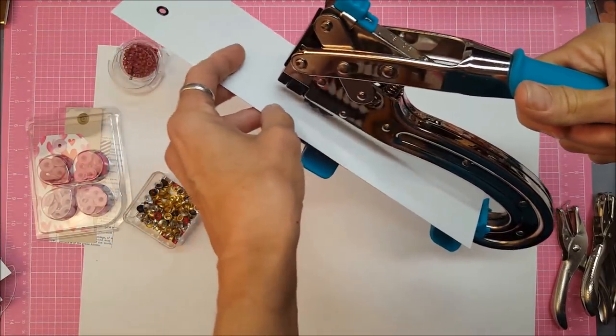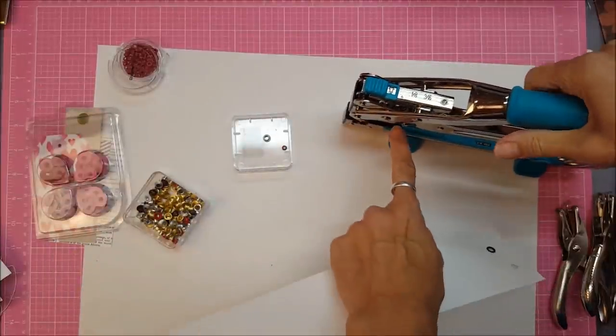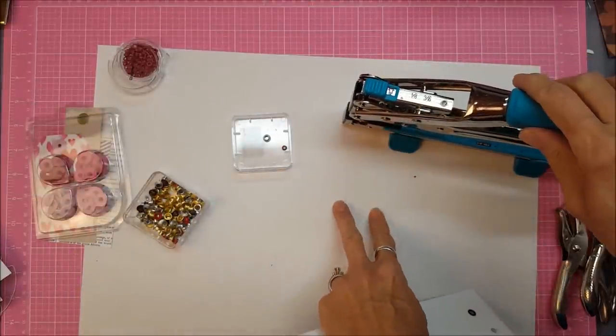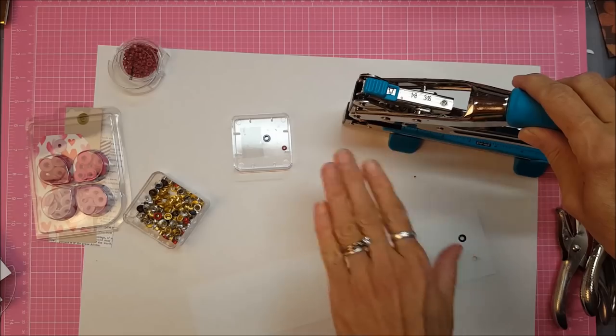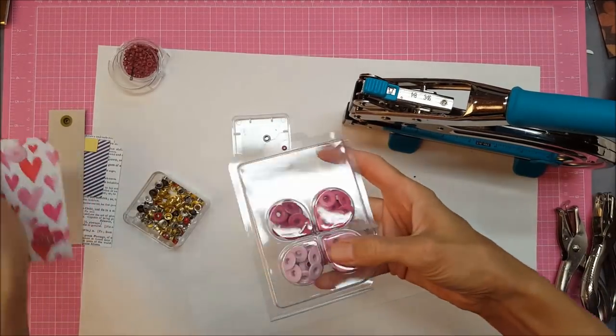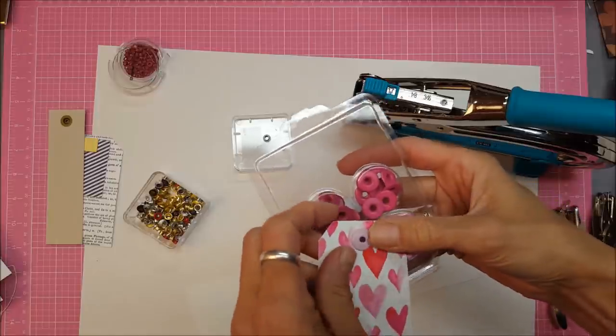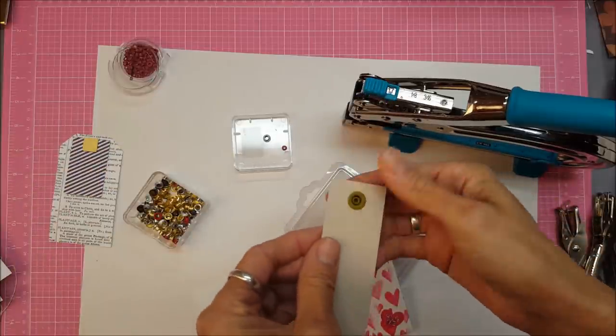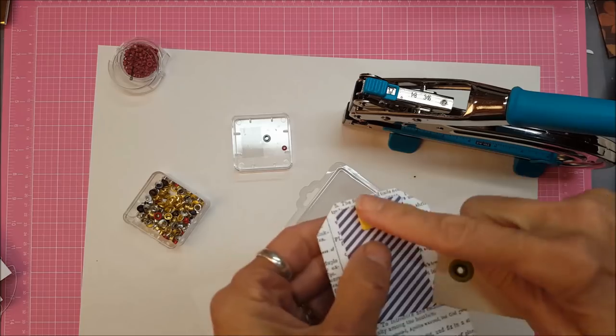It can punch a hole and set an eyelet right in there. This punches holes of two sizes, sets eyelets of two sizes, and it also has a flat setting so that you can smash the large eyelets and attach snaps.